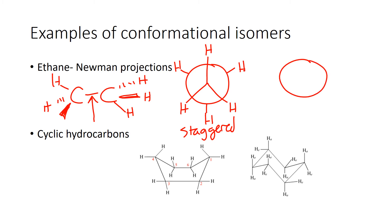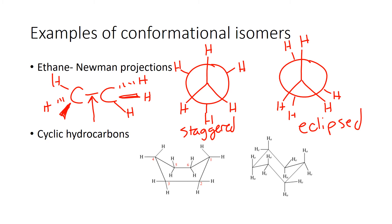The eclipsed conformation has the groups lined up. There's really nothing preventing ethane from rapidly going between the staggered and eclipsed conformations. In cyclic hydrocarbons, cyclohexane is a good example — the rings can basically move a little bit. We have boat conformation and chair conformation, and it's sort of like they're just flipping back and forth. You don't necessarily need to know boat and chair, but this is an example of a conformational isomer in a cyclic hydrocarbon.